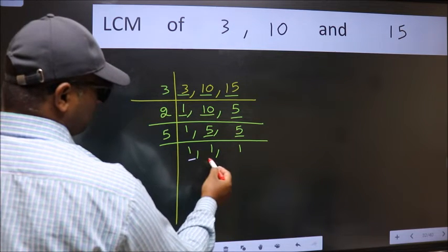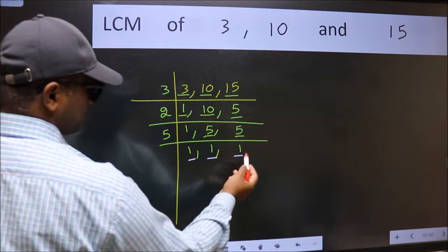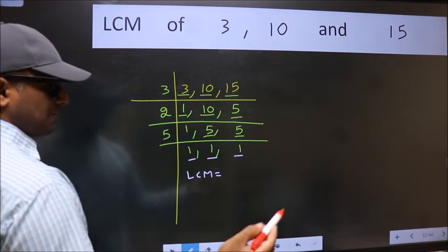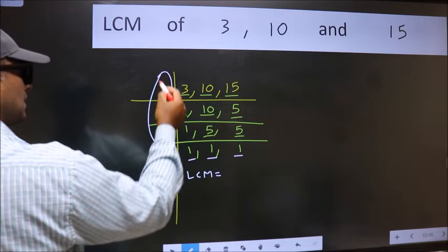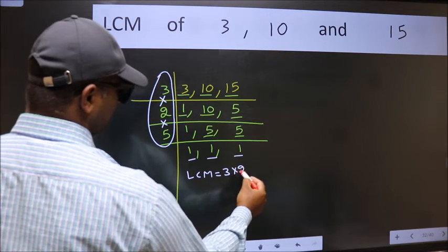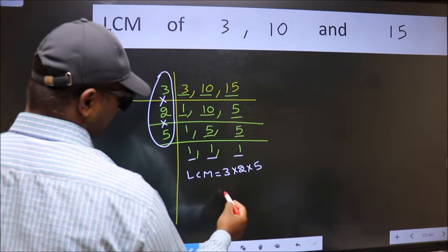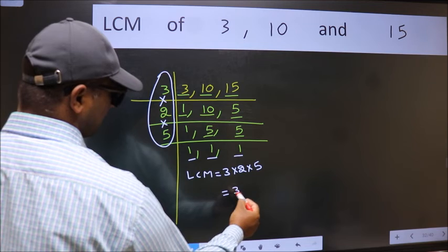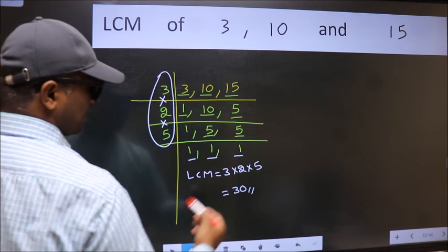Now we got 1 in all the 3 places. So our LCM is the product of these numbers that is 3 times 2 times 5. When we multiply these numbers we get 30 is our LCM.